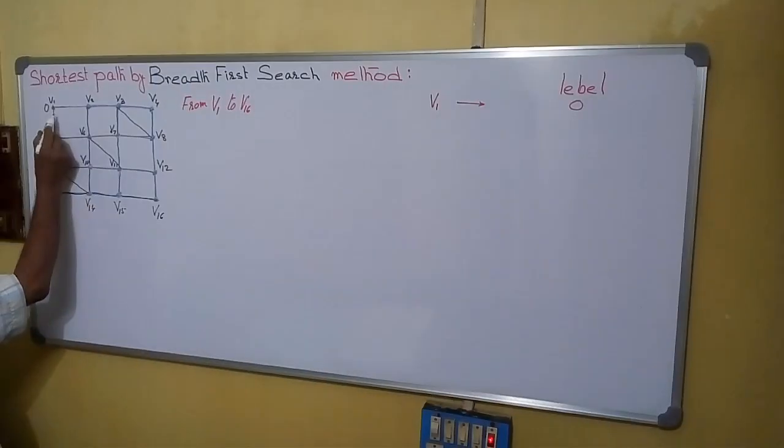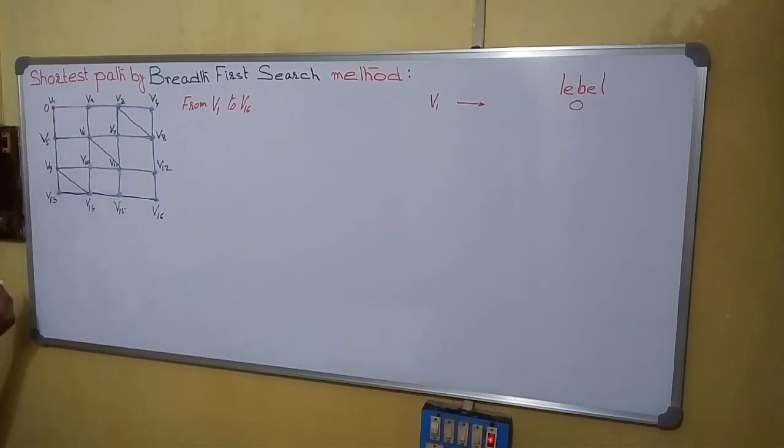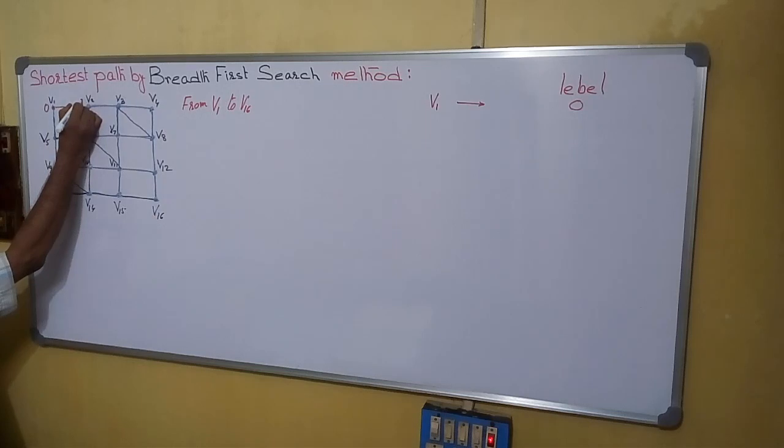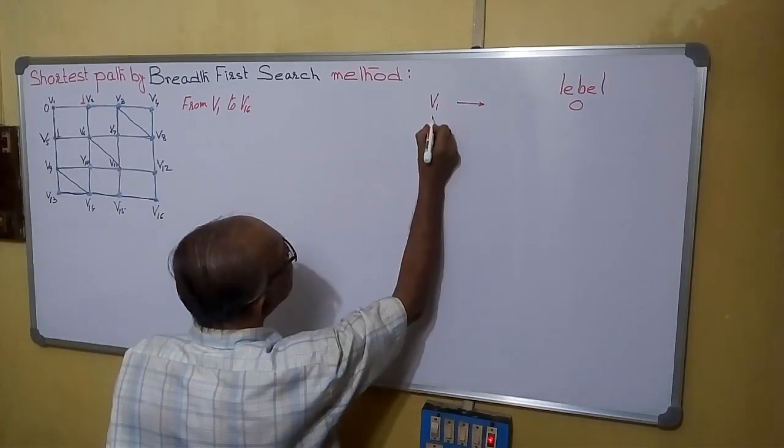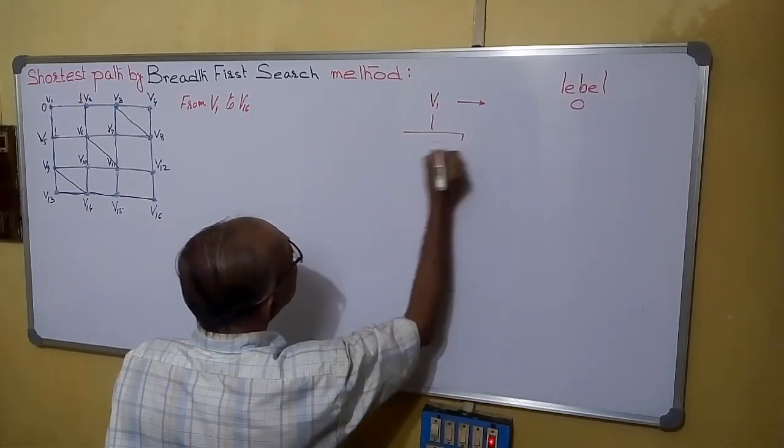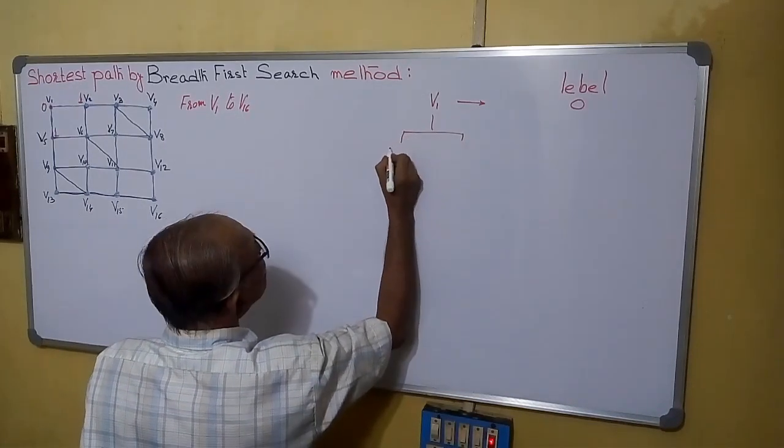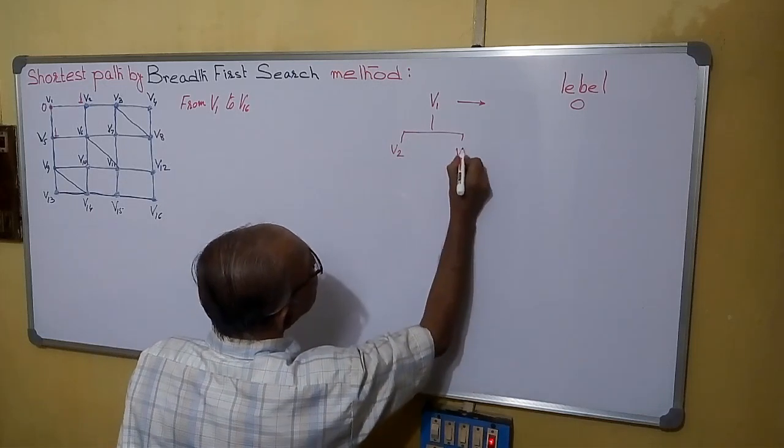Now go to the adjacent vertices. V2 and V5 are the two adjacent vertices. So mark those 0 plus 1 as 1 only to the adjacent vertices. This is also 1. So from V1 we are going to V2 and V5. Their level is 1.